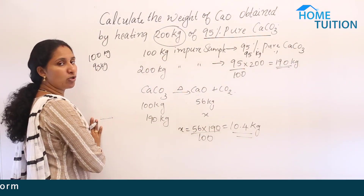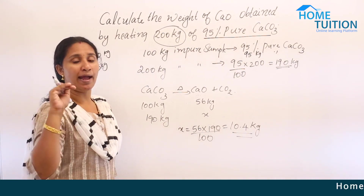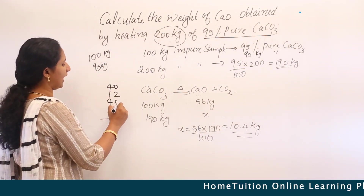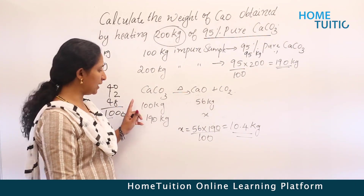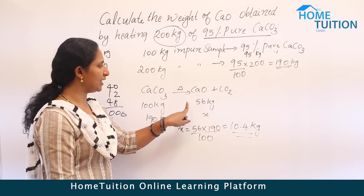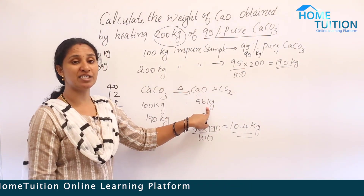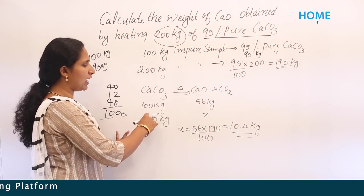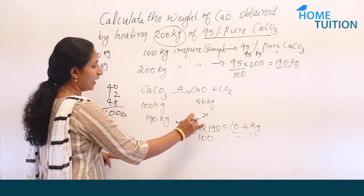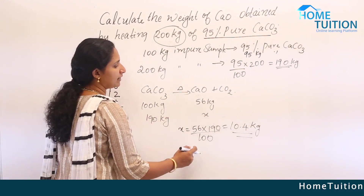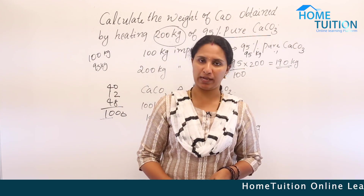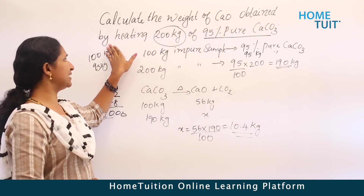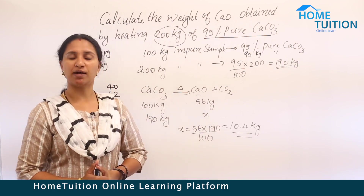As per the stoichiometric coefficients, 100 kg of CaCO3 gives 56 kg of CaO. By cross-multiplication: X equals 56 × 190 divided by 100, giving 106.4 kg of calcium oxide. This is the amount obtained by heating 200 kg of 95% pure calcium carbonate.